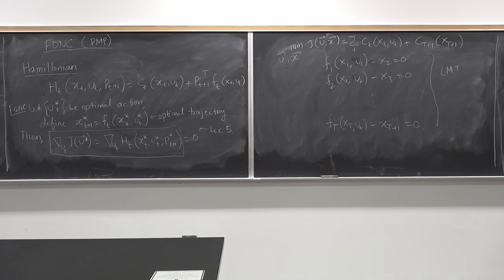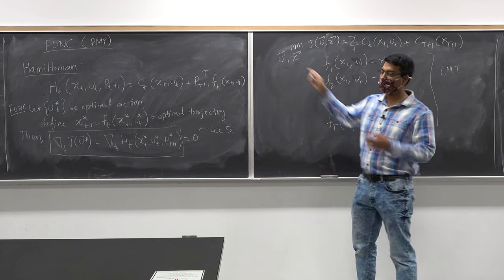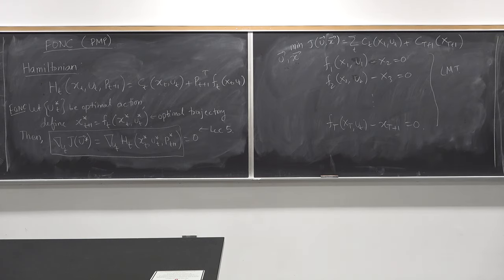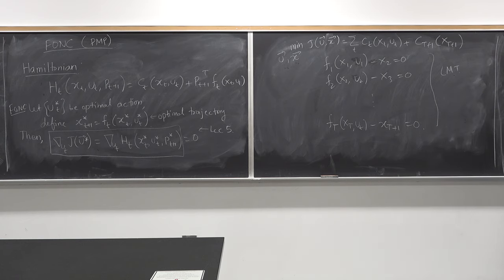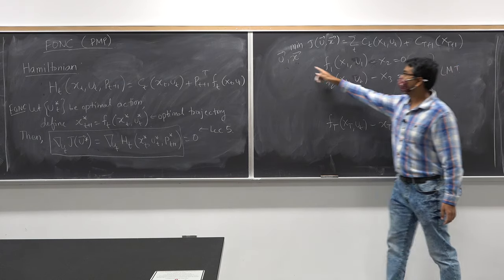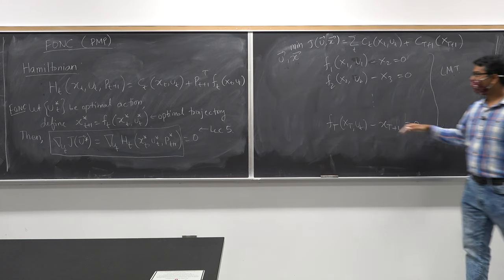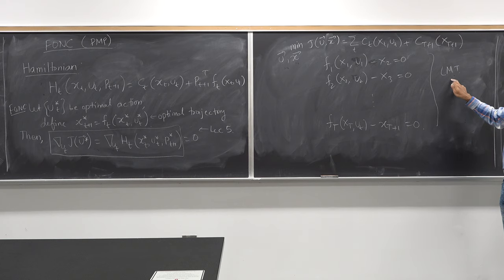If x*, u* is optimal and x* is a regular point, then we can apply the Lagrange multiplier theorem. Here I'm optimizing over both x and u, so if the vector (x, u) is a regular point, I can apply the Lagrange multiplier theorem to derive the first-order necessary conditions. It turns out — and I won't prove it in class — that every point (x, u) is a regular point, and therefore the Lagrange multiplier theorem is applicable.